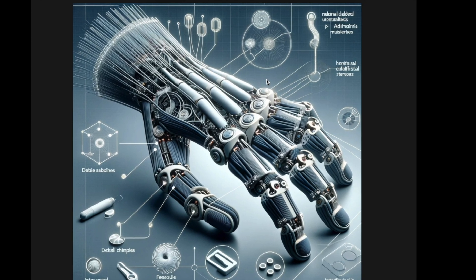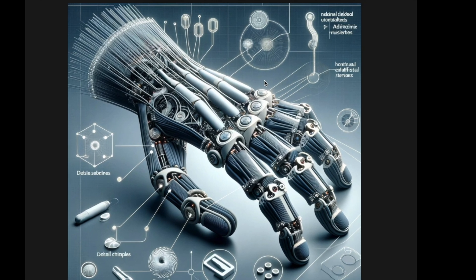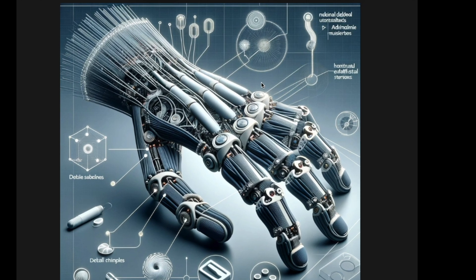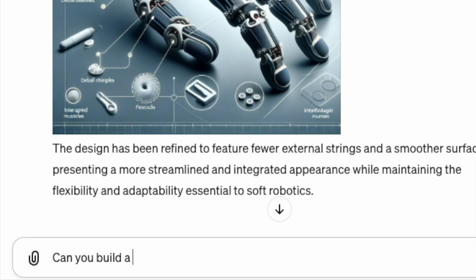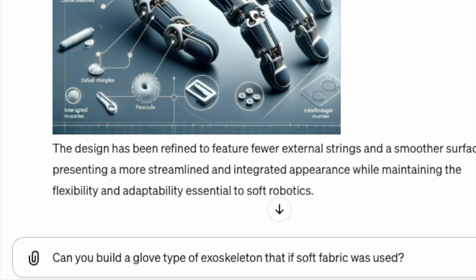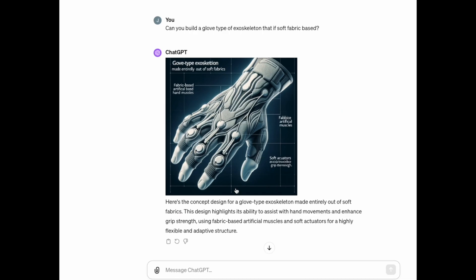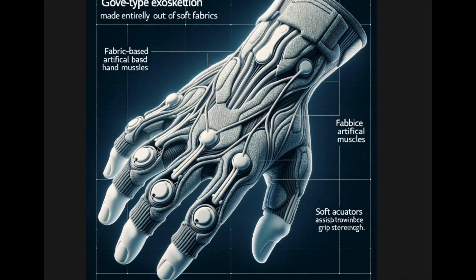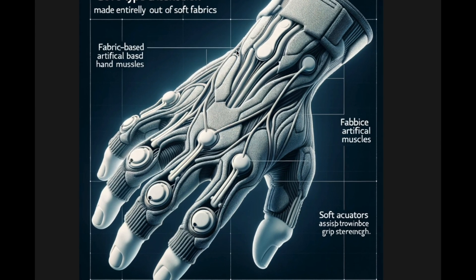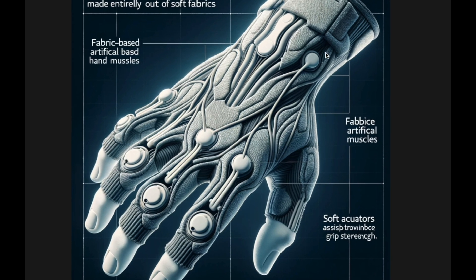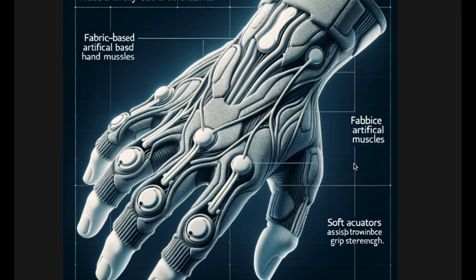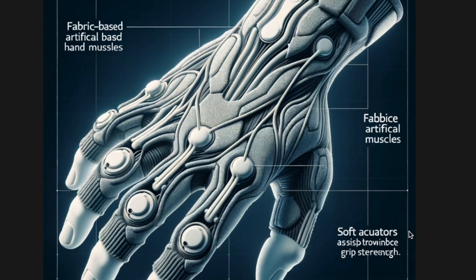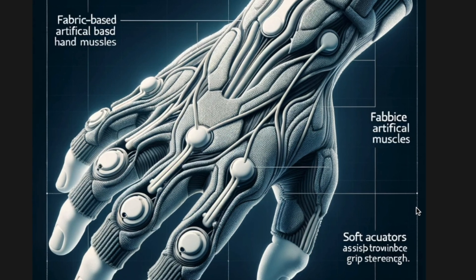These concepts were mostly designed based on a robotic hand instead of an exoskeleton — something wearable. So as a last prompt I asked: 'Can you build a glove type of soft fabric-based exoskeleton?' The final image is something very useful that could be used as a reference when we design a soft exoskeleton.